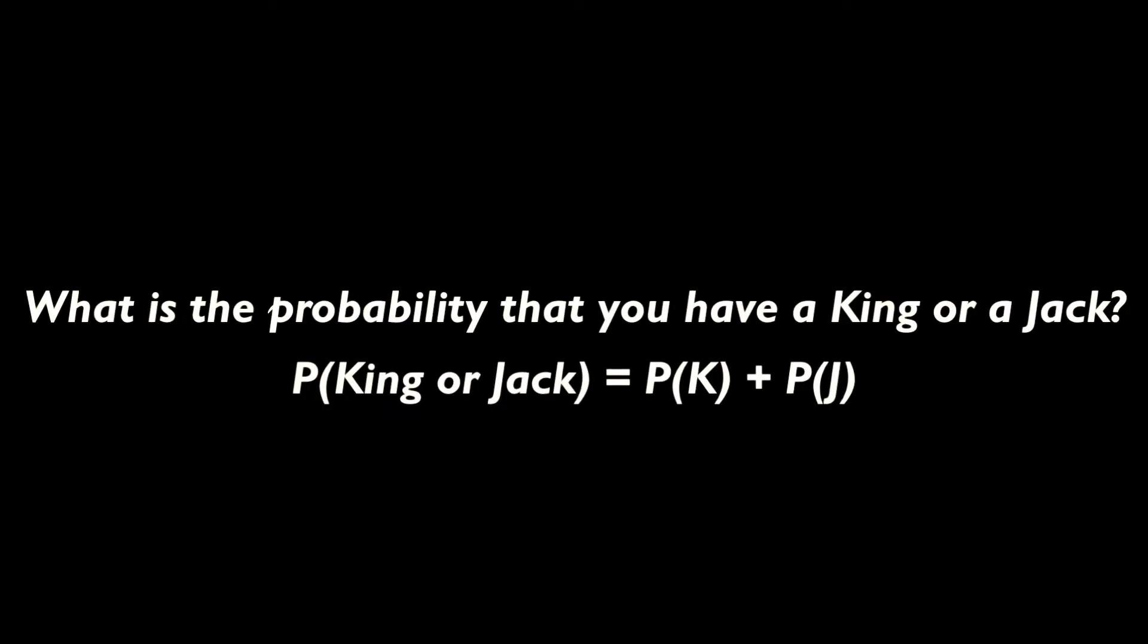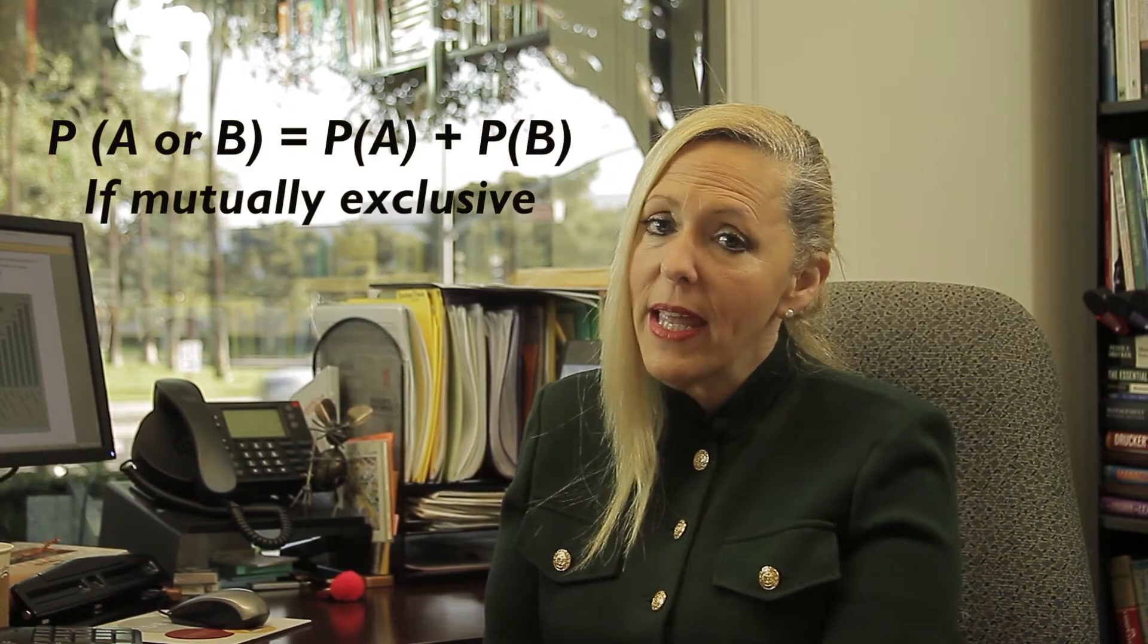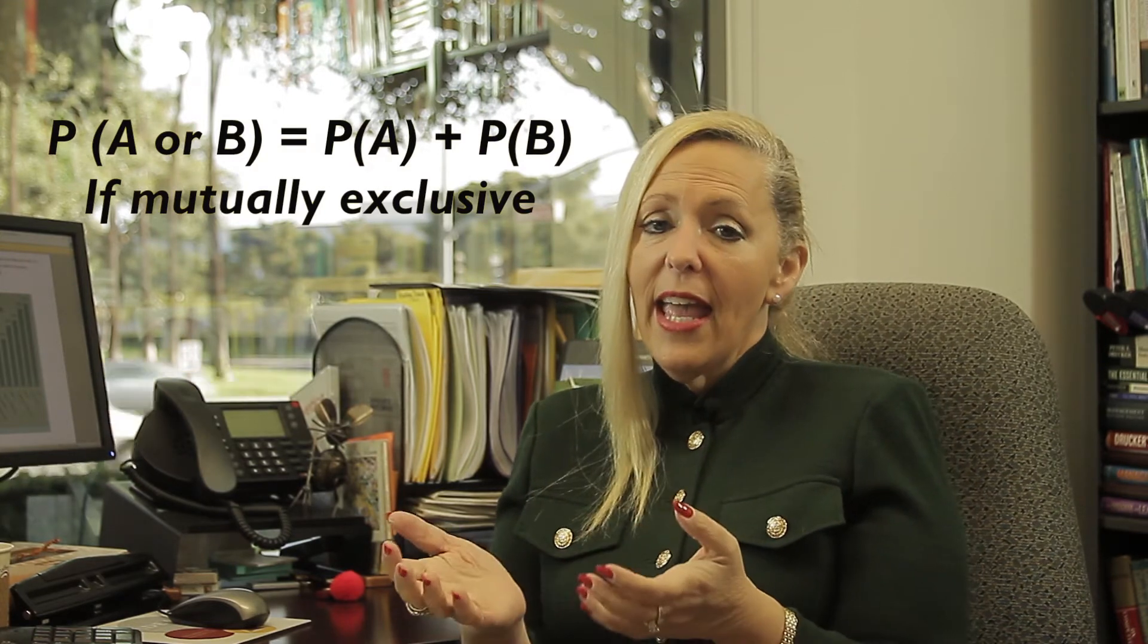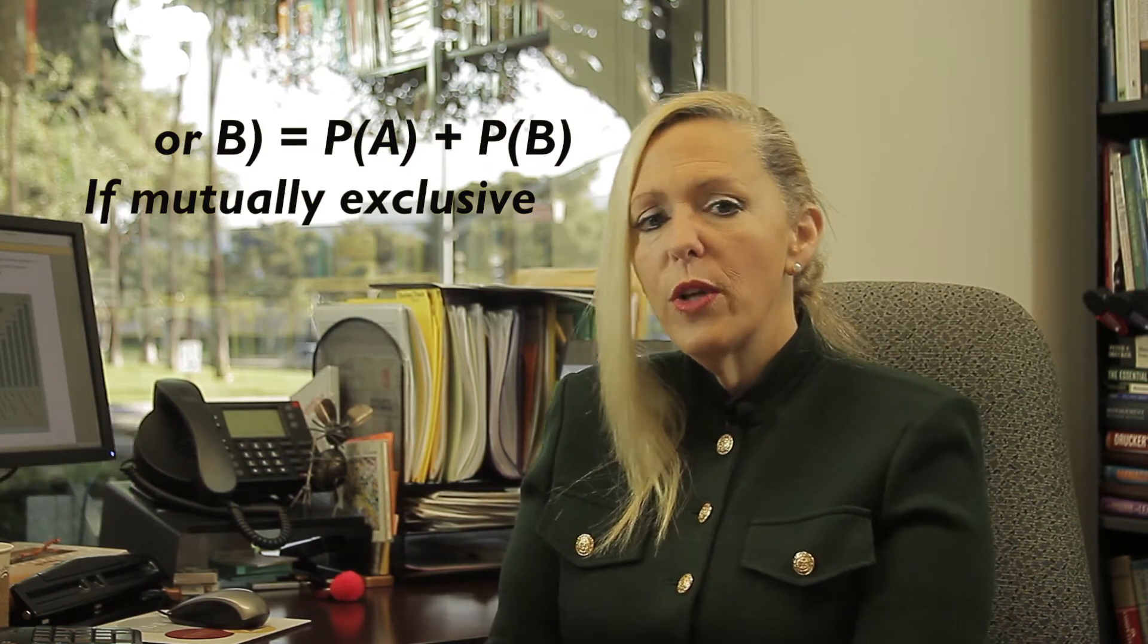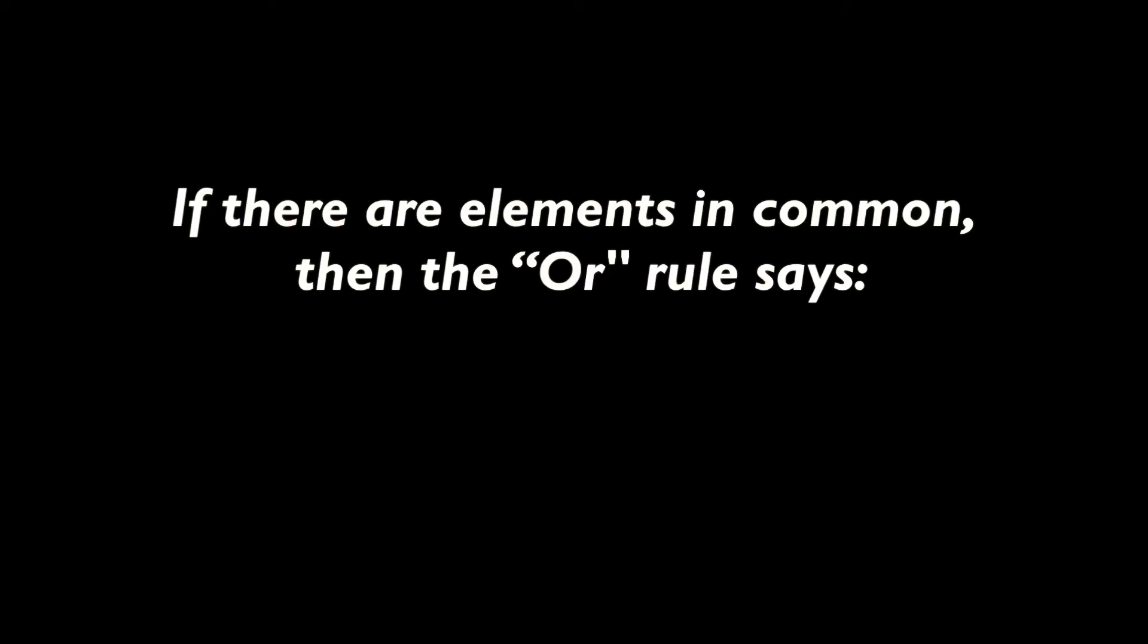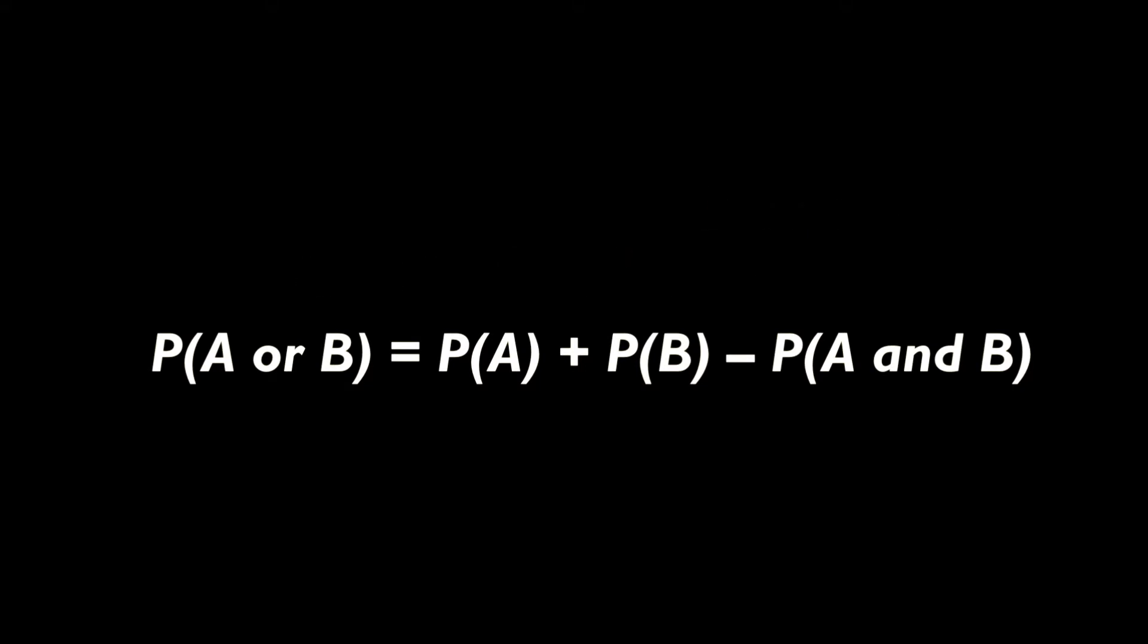Now, what is the probability you have a king or a jack? The OR rule says the probability of A or B equals the probability of A plus the probability of B if mutually exclusive, which means there are no elements in common. If there are elements in common, then the OR rule says that the probability of A or B equals the probability of A plus the probability of B minus the probability of A and B.